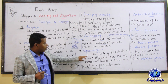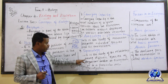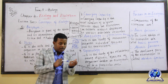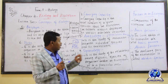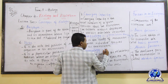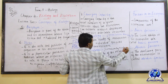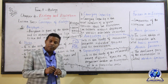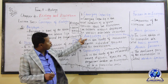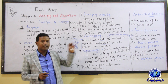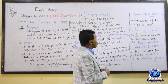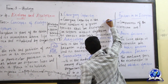Ecology is the study of the relationship between different species of organisms in an ecosystem. This includes autecology — the study of individual species — and synecology, also called population and community ecology, which deals with different species within a community.